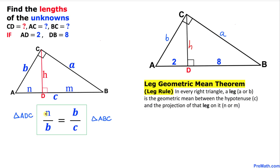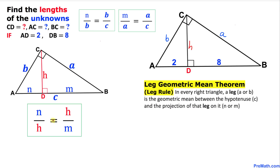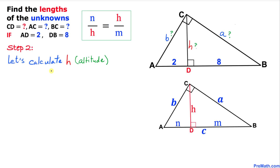Here is our first proportion for leg b: N over b equals b over C, where N is segment AD. Here is our next proportion for leg a: M over a equals a over C. And finally, here is the proportion for altitude H: N over H equals H over M. In the next step we are going to calculate altitude H using this last proportion.